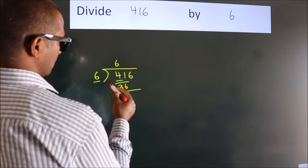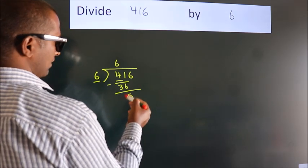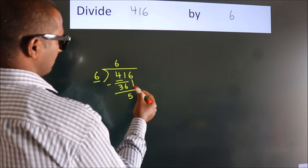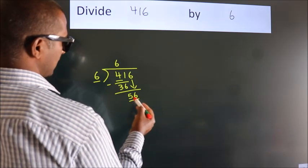Now we should subtract. We get 5. After this, bring down the next number, so 6 down. So 56.